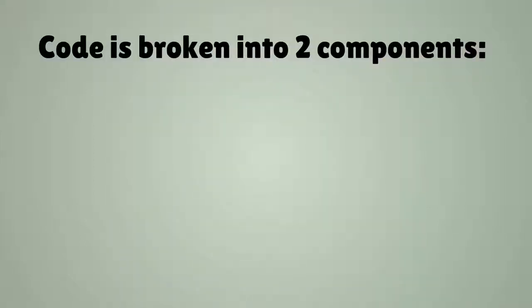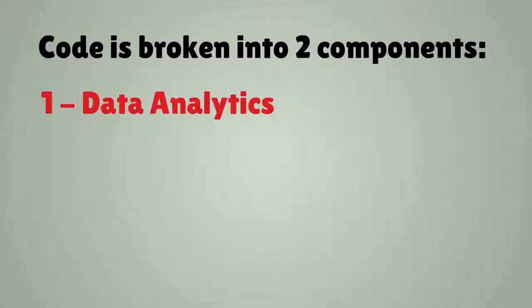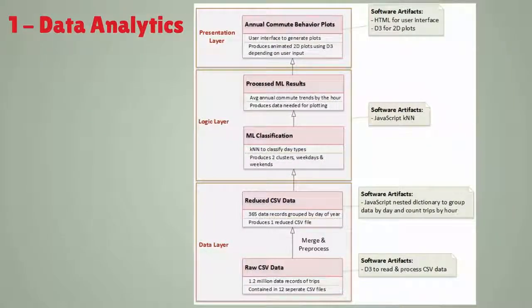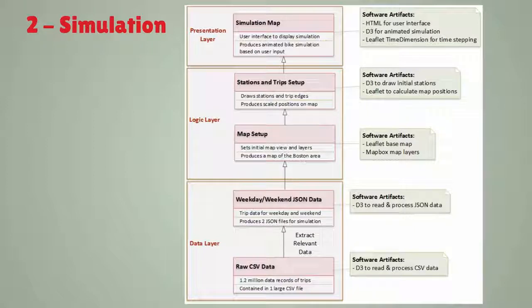The code developed for this project is broken into two separate components — one doing the data analytics and the other doing the simulation of the data. The first component does the data analytics by reducing the data, then applying the KNN algorithm to classify the days into two clusters of weekdays and weekends. It then computes the average behavior for the two clusters and produces 2D plots for the annual commute trends.